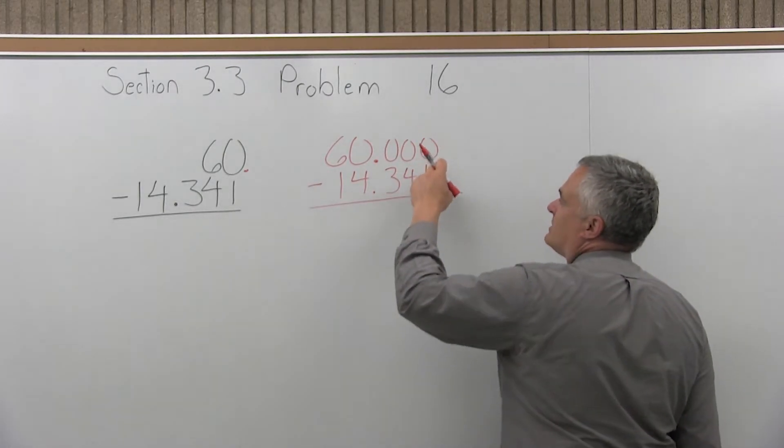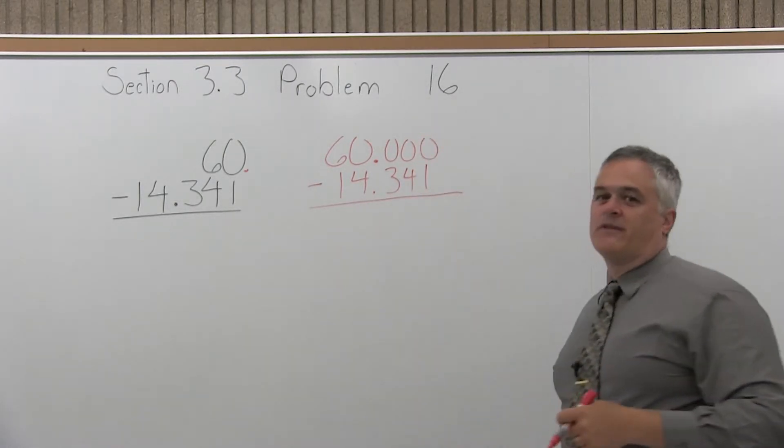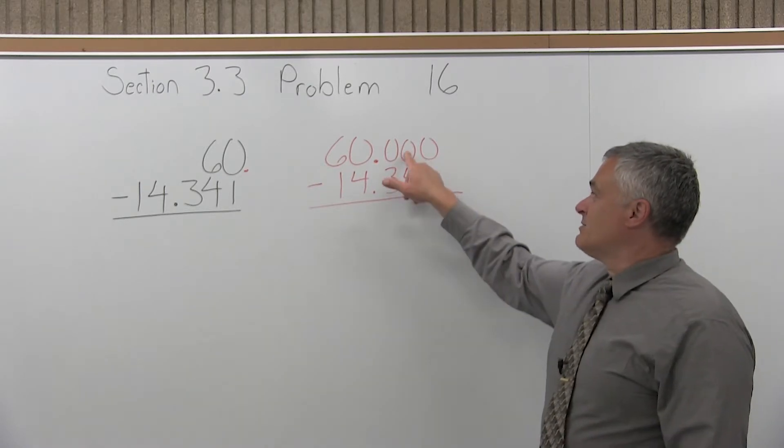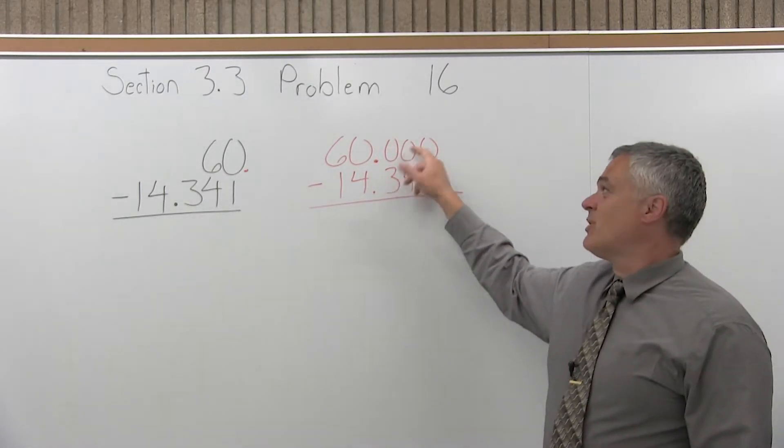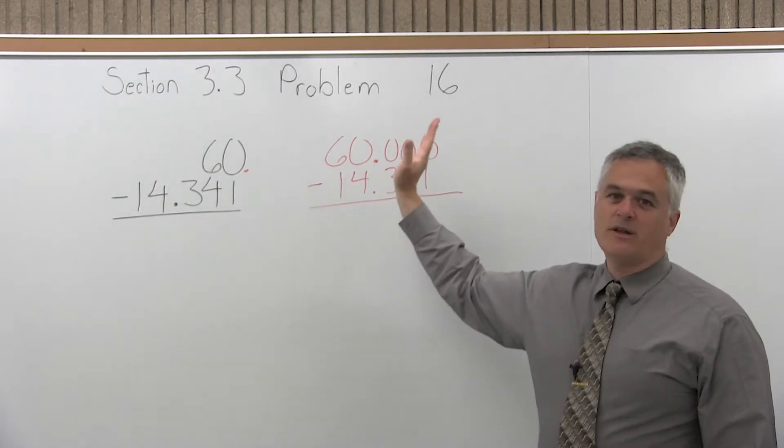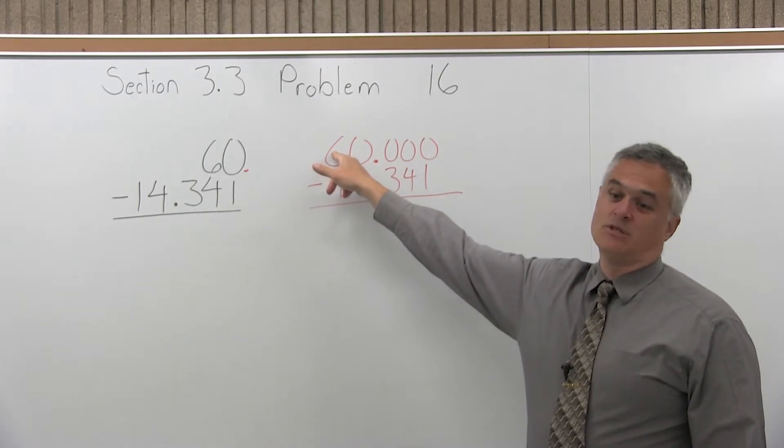Now as you subtract, you have zero minus one. The zero's not big enough. We have to borrow. But now the next position to the left is also a zero. This is a problem. Now we have to go as far to the left as we have to go until we get a non-zero digit, which would be the six.